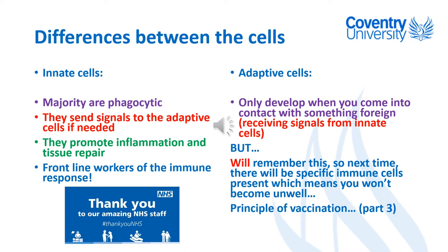The adaptive cells are quite different. When you're born, your adaptive immune system is not fully functional — you've got all the equipment there but it hasn't been fully developed to have strong responses. It can only develop fully when you come into contact with a pathogen or something foreign — something non-self — and it can only see and respond to that when it receives signals from the innate immune response.